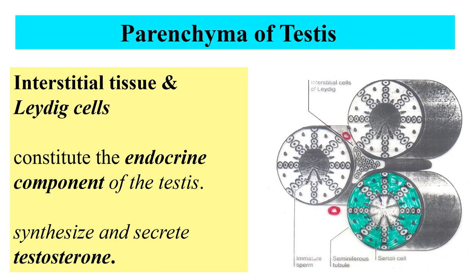The interstitial compartment of the parenchyma lies between the seminiferous tubules and constitutes about 10–20% of the volume of the testis. It is filled by loose interstitial tissue and Leydig cells. It constitutes the endocrine component of the testis and synthesizes and secretes testosterone hormone.